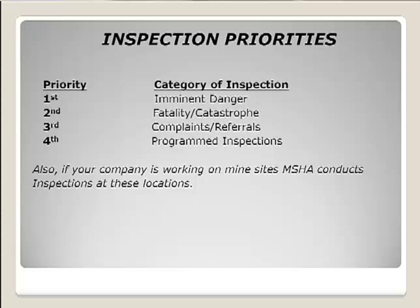Looking at inspection priorities: the first priority is imminent danger, which gets top priority. The definition of imminent danger is that there is reasonable certainty that a danger exists that can be expected to cause death or serious physical harm immediately. Examples include someone working on a scaffold without guardrails or fall protection, or employees working in an unstable trench without protective systems in place.